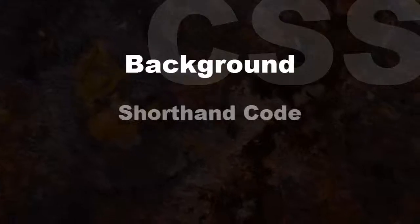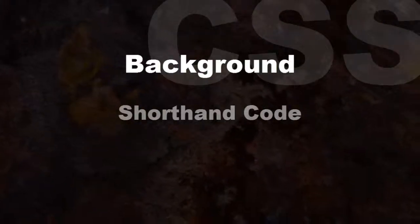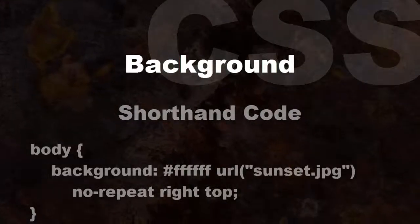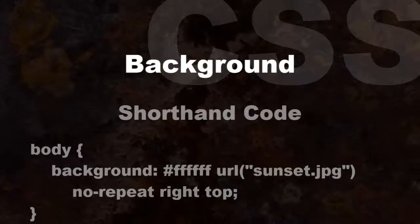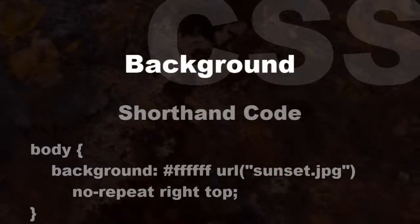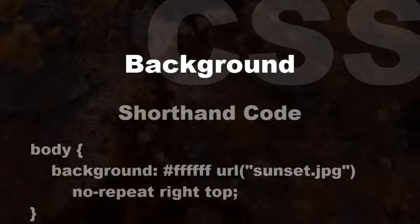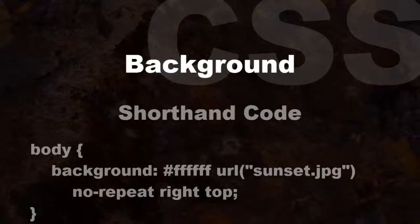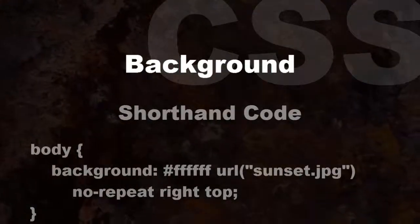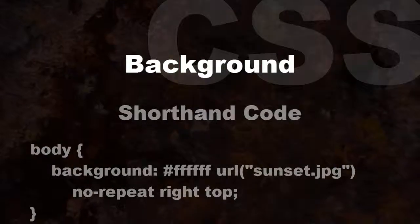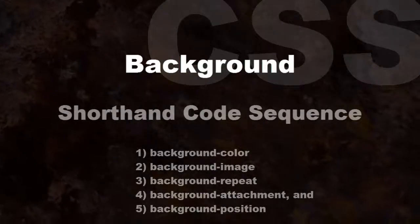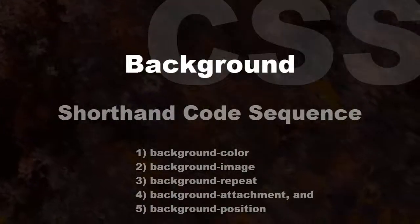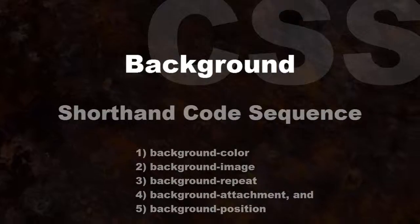CSS allows background shorthand versions to make your code more compact and simple. For example: body { background: #fffffe url("sunset.jpg") no-repeat right top; }. The sequence for background shorthand values is: background-color, background-image, background-repeat, background-attachment, and background-position.